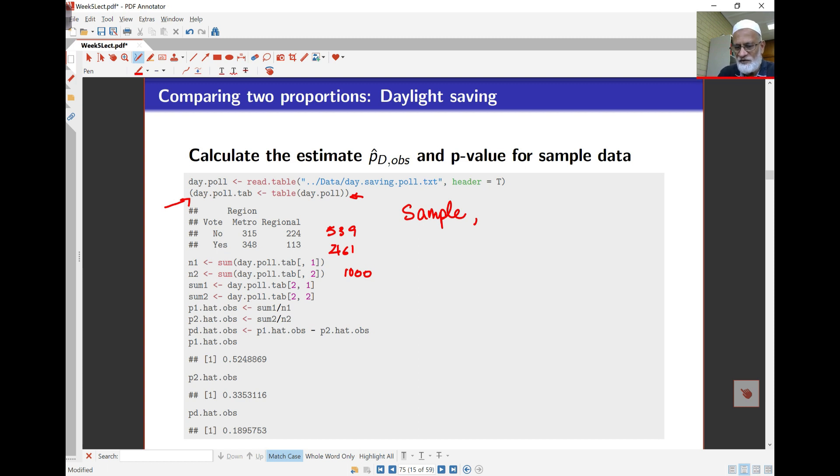n1 is the sum of the table, first column. The first entry in the square brackets refers to the row and the other one refers to the column. So I'm looking at not the row but the column, the sum of the first column, which is the number of votes in the metro. The other one is the sum of the second column, which is looking at the number of votes in regional. When I take a look at a specific entry like 2-1, it says take a look at the second row and the first column. So this is working out the number of yes-votes in metro.